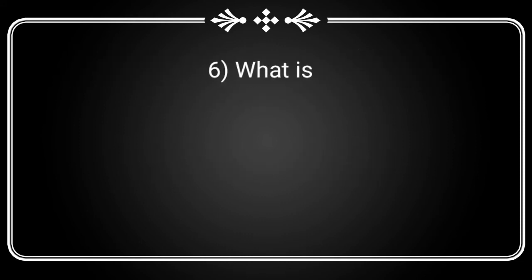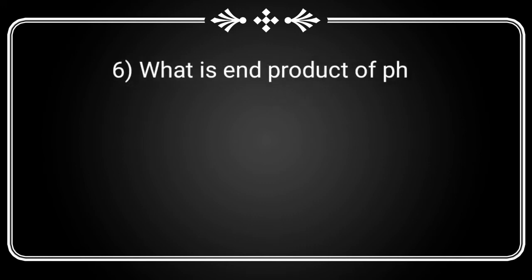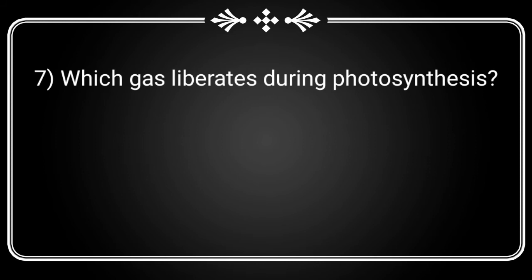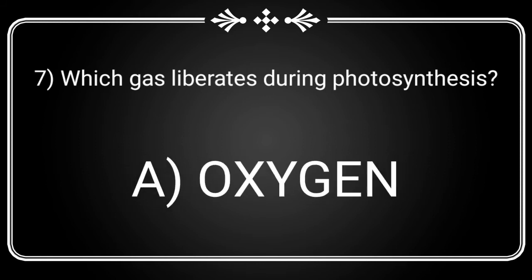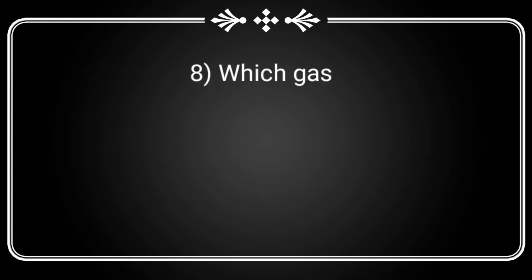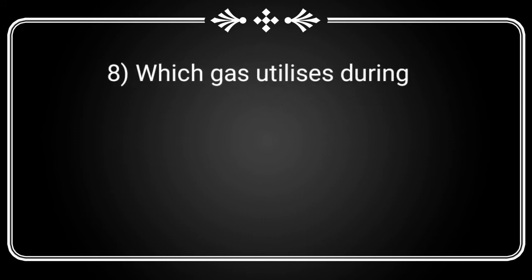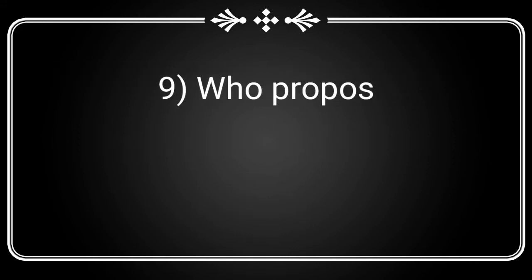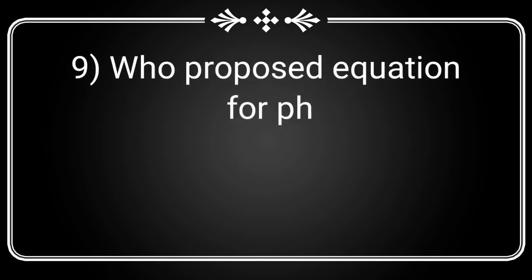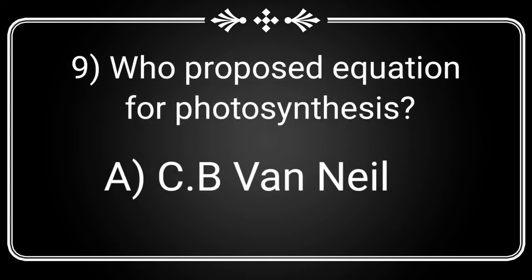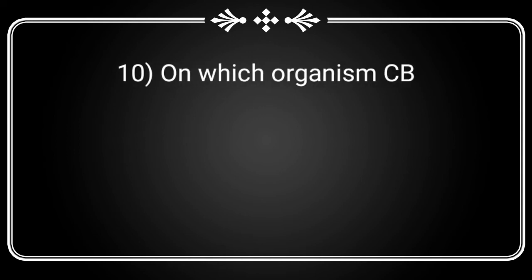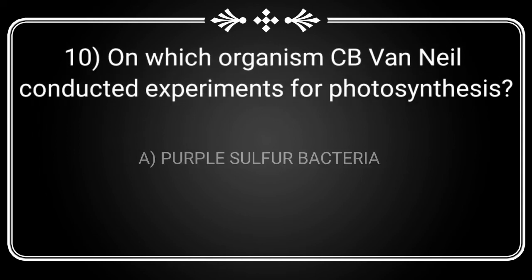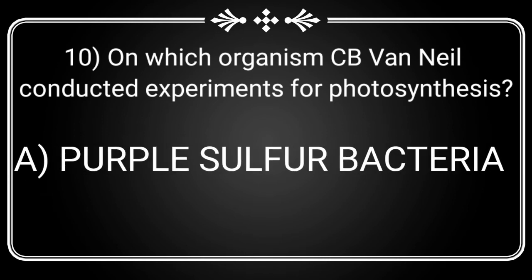What are the end products of photosynthesis? Glucose. Which gas liberates during photosynthesis? Oxygen. Which gas is utilized during photosynthesis? Carbon dioxide. Who proposed the equation for photosynthesis? C.B. Van Niel. On which organism did C.B. Van Niel conduct experiments for photosynthesis? Purple sulfur bacteria.